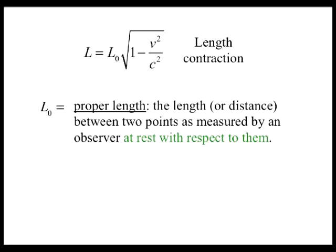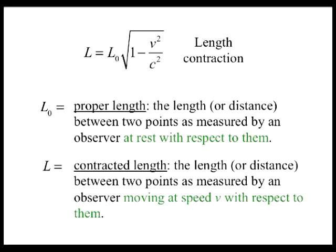L0 is the proper length, which is the length or distance between two points as measured by an observer at rest with respect to them. L is the contracted length between two points as measured by an observer moving at a speed v with respect to them.